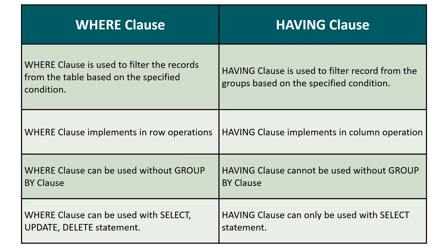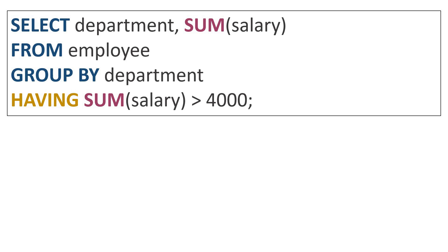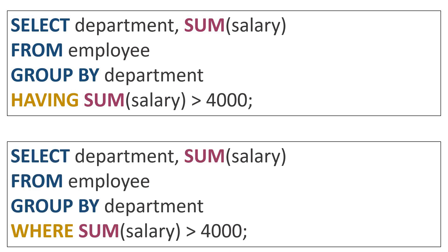The next difference is that the where clause can be used with the select, update, and delete statements, while the having clause can only be used with the select statement. Our next important difference is: the where clause cannot contain aggregate functions, while the having clause can contain aggregate functions. We cannot apply an aggregate filter condition with the where clause — it will give an error because the where clause works on rows, not on groups.